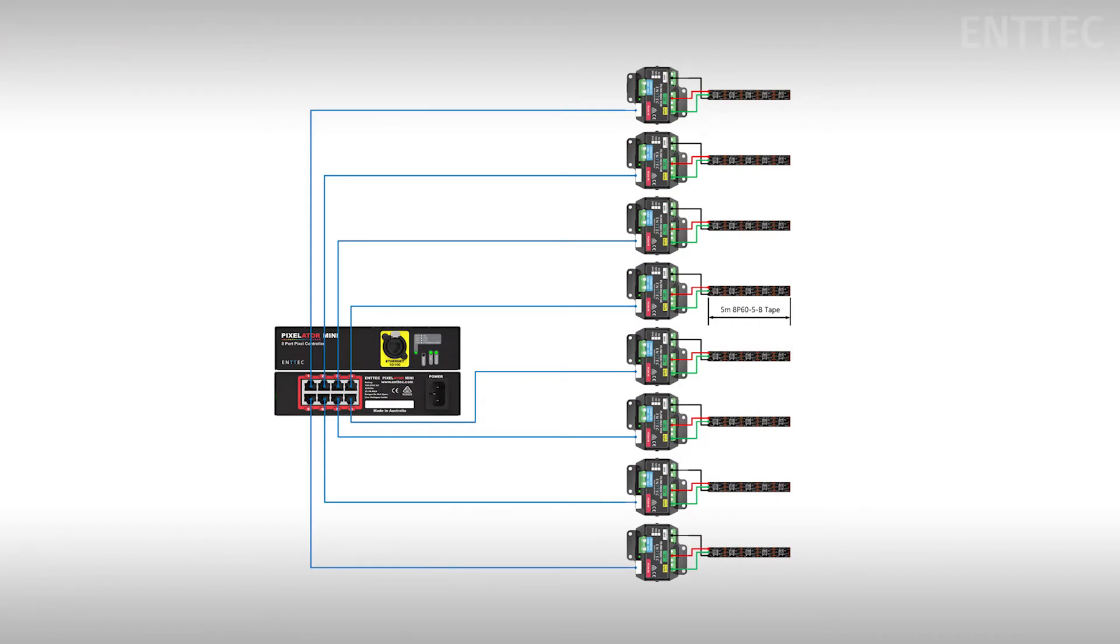Let's consider an example where we have a Pixelator Mini fully loaded with 5 volt pixel tape. Let's also assume that we have the sections of tape close together so that the grid is dense enough to create a simple video screen.